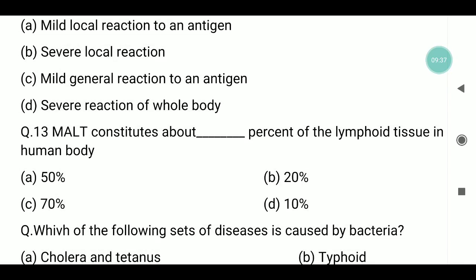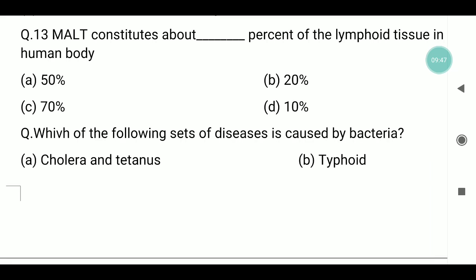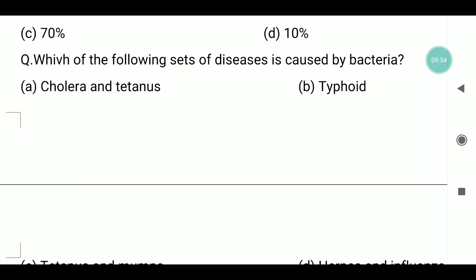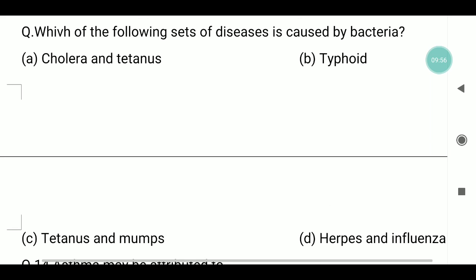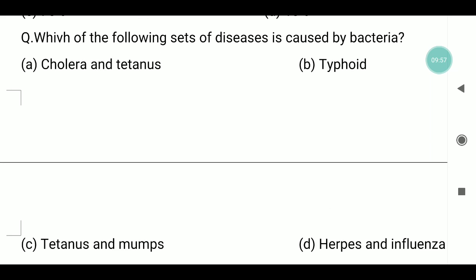Question number thirteen: MALT — mucosa-associated lymphoid tissue — constitutes approximately 50 percent of the total lymphoid tissue in our body. Question number fourteen: which set of diseases is caused by bacteria? The answer is cholera and tetanus, option A.